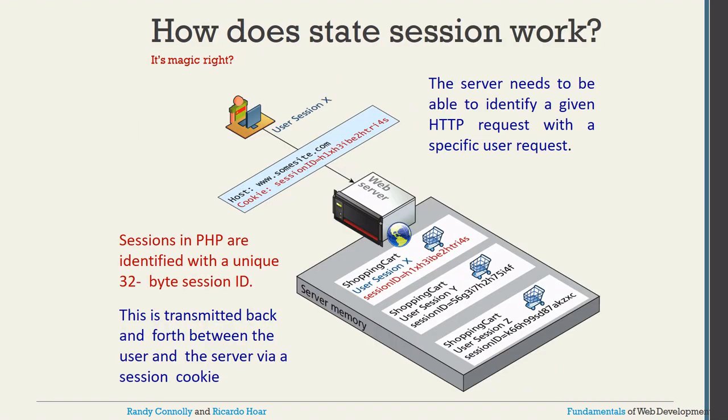Sessions in PHP are identified with a unique 32-byte session ID. The server uses this ID to identify a given HTTP request from a specific user, and it is transmitted back and forth between user and server via a session cookie. For example, a user's session cookie for a domain like somesite.com holds a 32-byte session ID. In a shopping cart, user X and user Y each get different session IDs, so each user's cart data is kept separately based on their session ID.